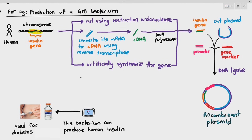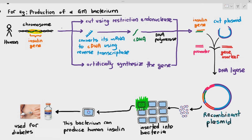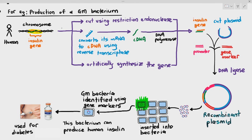Using DNA ligase, we attach all these fragments together to get a recombinant plasmid. We insert the recombinant plasmid into the bacterium. If the bacterium takes up the recombinant plasmid, the bacterium is able to glow. If the bacterium glows, we have identified the genetically modified bacteria using the gene marker.